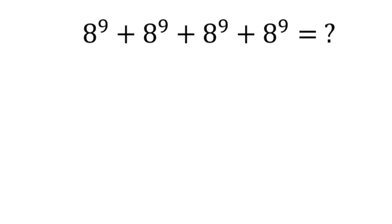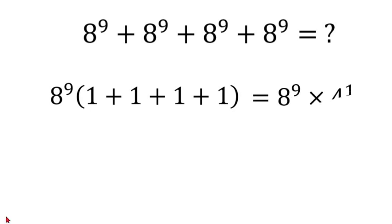The first thing we are going to do here is rewrite this expression as 8 to the power of 9 times 1 plus 1 plus 1 plus 1. And once we have done that, 1 plus 1 plus 1 plus 1 would be equal to 4. So this would be 8 to the power of 9 times 4 to the power of 1.